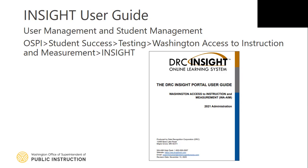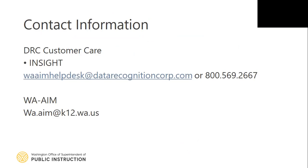The INSIGHT Portal User Guide can be accessed from the OSPI website by following this path: OSPI Student Success, Testing, Washington Access to Instruction and Measurement, INSIGHT. Questions related to INSIGHT systems should be sent directly to DRC at WA-AIM Help Desk at datarecognitioncore.com or by calling 800-569-2667. All other questions should be sent to the OSPI WA-AIM inbox at wa.aim@k12.wa.us.